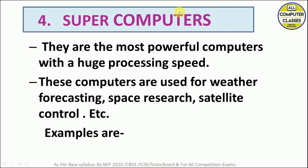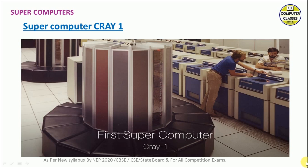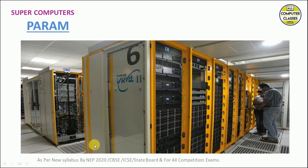The fourth and final category is super computers. As the name suggests, they are the most powerful computers with the highest processing speed. They process huge amounts of data at very high speed. Super computers are useful for weather forecasting, space research, and satellite control. The first super computer was the Cray-1, but India's first super computer was called Param, which is India's own supercomputer.